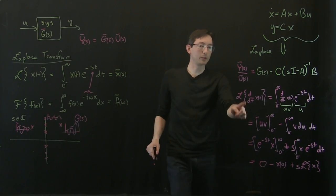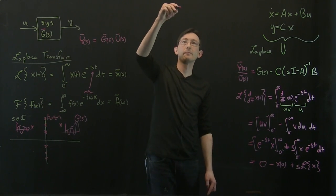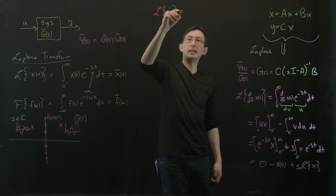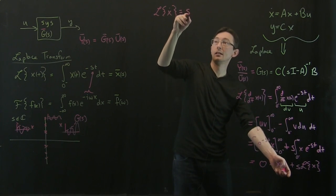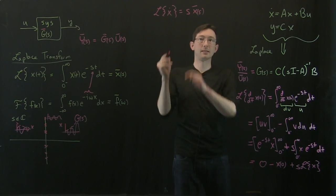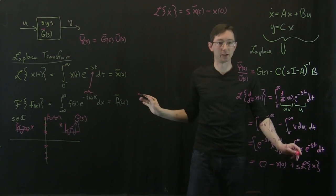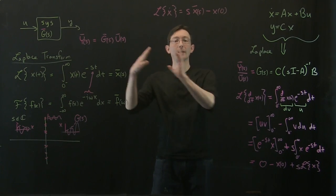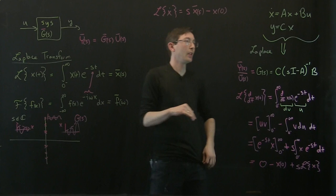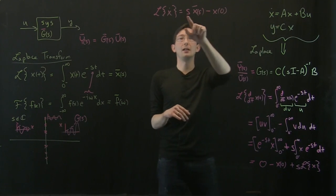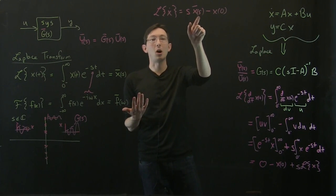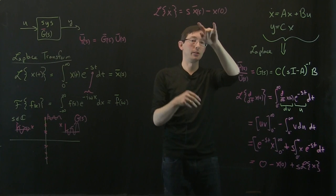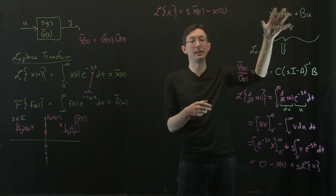This is a really, really nice property. The Laplace transform of x-dot equals s times the Laplace transform of x, minus the initial conditions. This is one of the main reasons we like working in the Laplace transform domain: derivatives become polynomials in s. We go from a differential equation to an algebraic equation when we work in the Laplace transform domain.